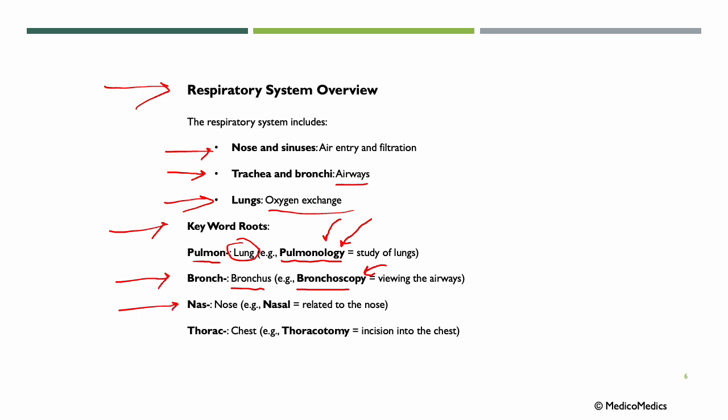NAS or NASO means nose, so if we want to talk about something related to the nose, we say NASAL. And finally, THORAC means chest, so THORACOTOMY means incision into the chest.